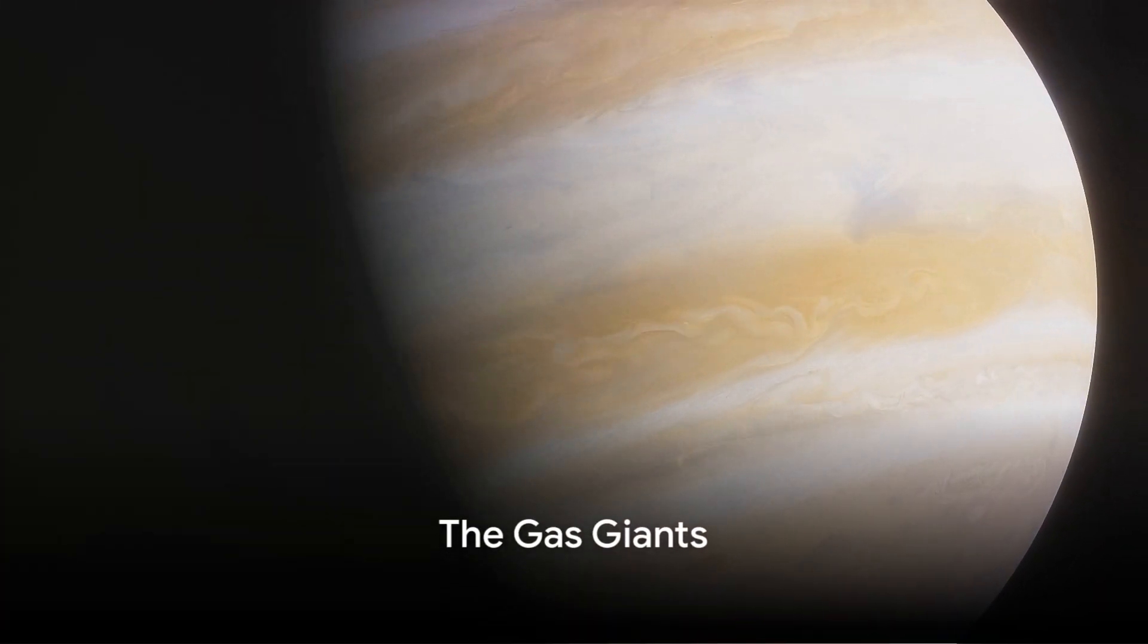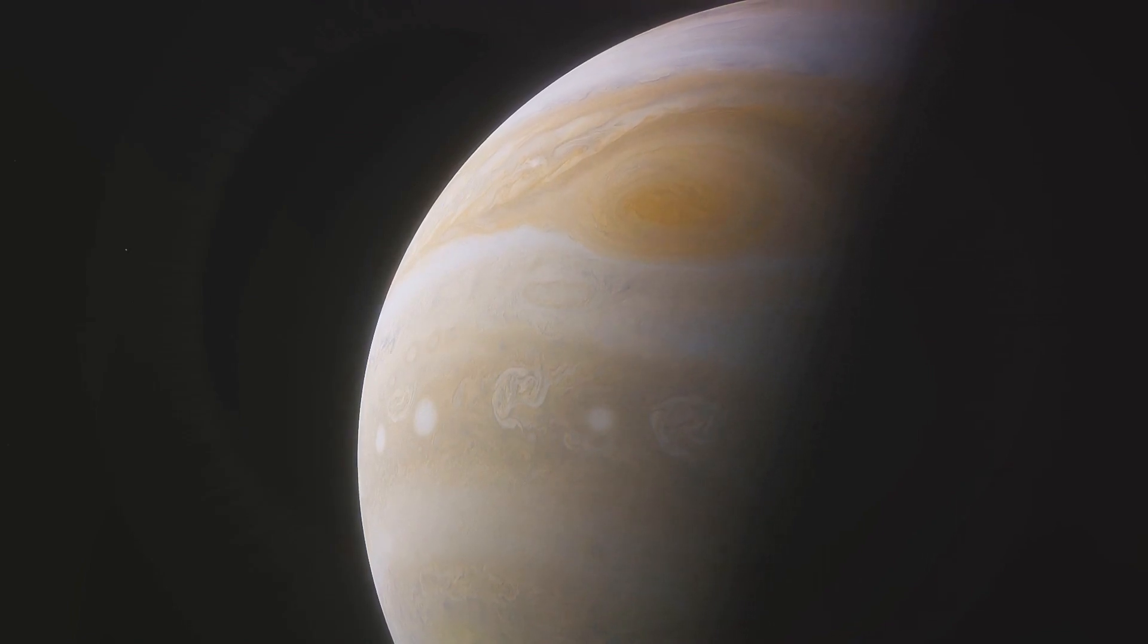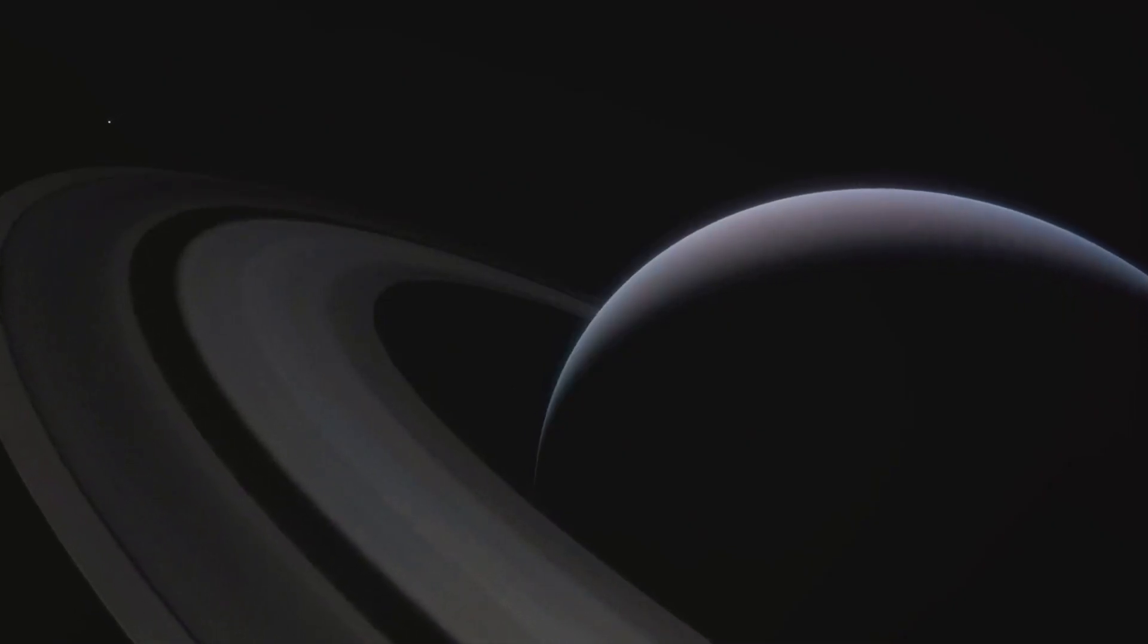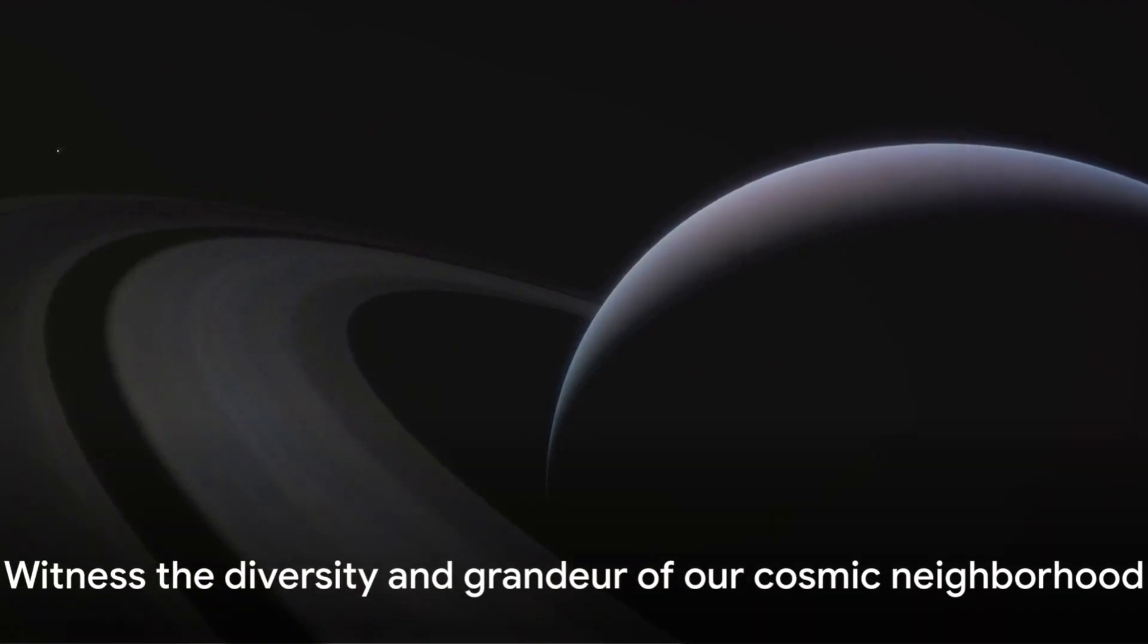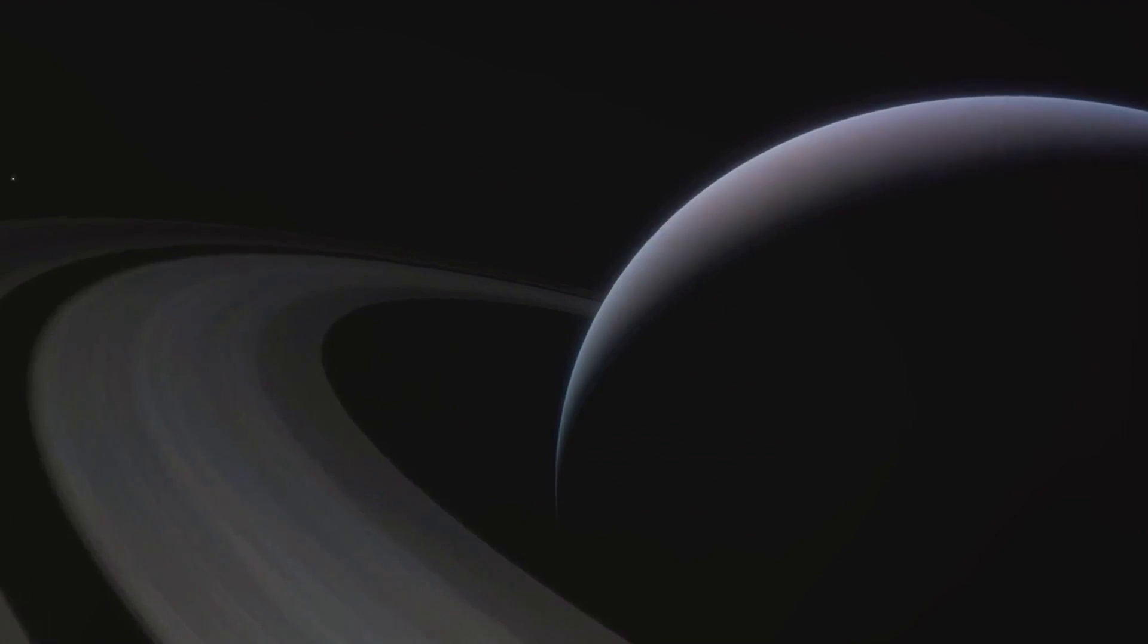Next, we venture further to the gas giants of our solar system. Jupiter, the largest planet with its signature red spot, a storm larger than Earth itself, and Saturn with its spectacular ring system made of countless ice particles reflecting sunlight. These planets serve as a testament to the diversity and grandeur of our cosmic neighborhood.